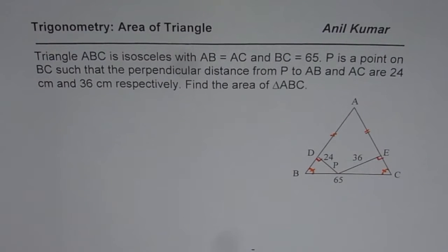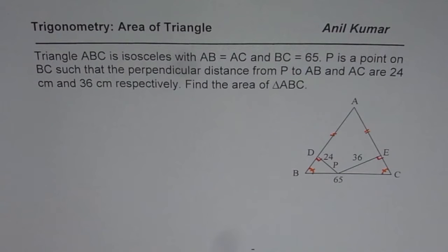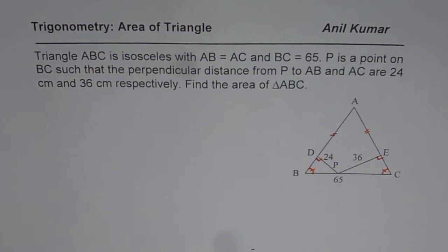I am Anil Kumar and here is a very interesting question on area of triangle. Triangle ABC is isosceles with AB equals to AC and BC equals to 65. P is a point on BC such that the perpendicular distance from P to AB and AC are 24 cm and 36 cm respectively. Find the area of triangle ABC.